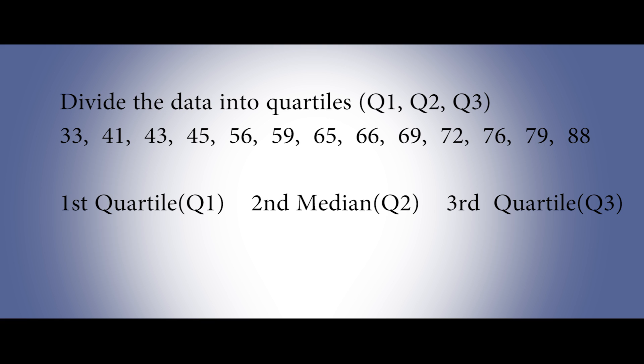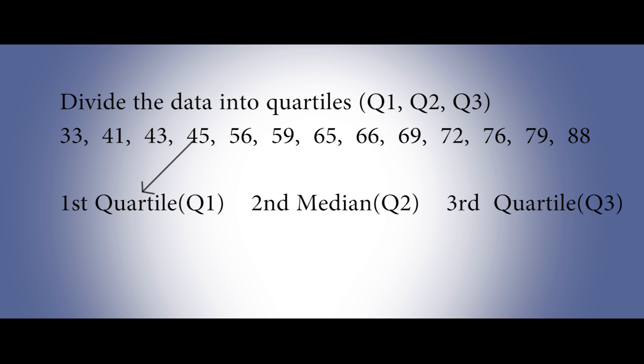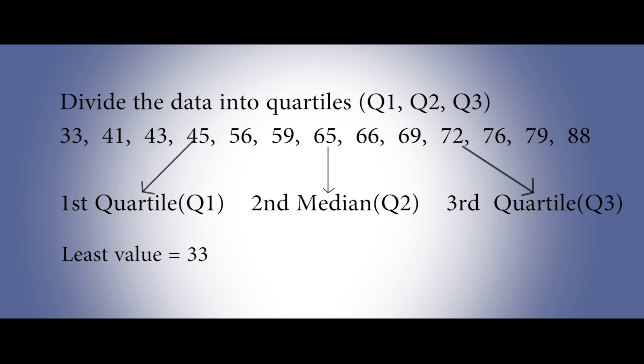After arranging the data from least to greatest, the next step is to divide that data into Quartile 1, Quartile 2, and Quartile 3. Q2 also means it is the median — the middle data. So you are going to divide this data into three quartiles: Q1, Q2, and Q3. Q1 would be 45, the median or Q2 is 65, and Q3 would be 72. You should also know the least data value is 33 and the highest data value is 88.